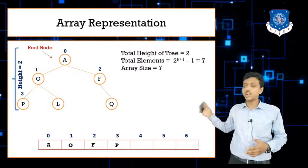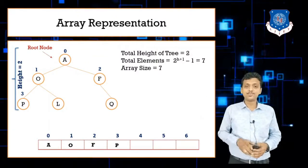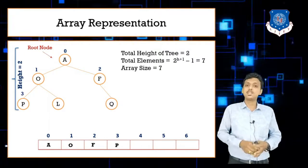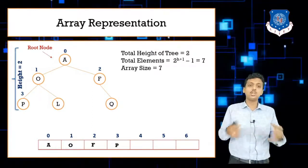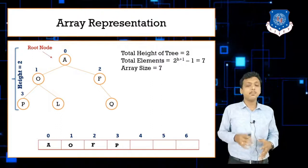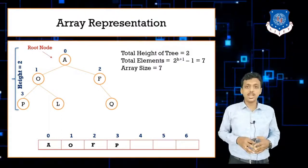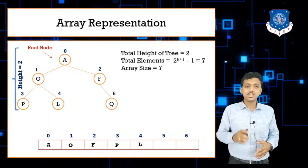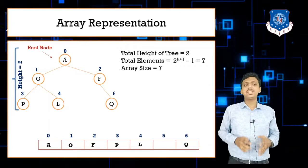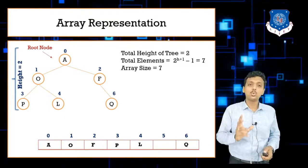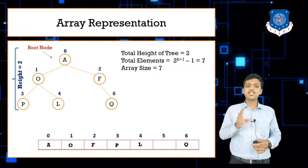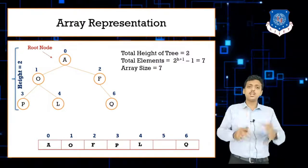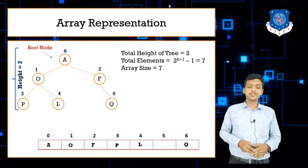Now, does F have a left child? No. But since this is a fixed-size array, we must still reserve that space — we just leave it empty. So index 5 remains empty. Then Q is placed at index 6. This is how we represent a tree using an array.